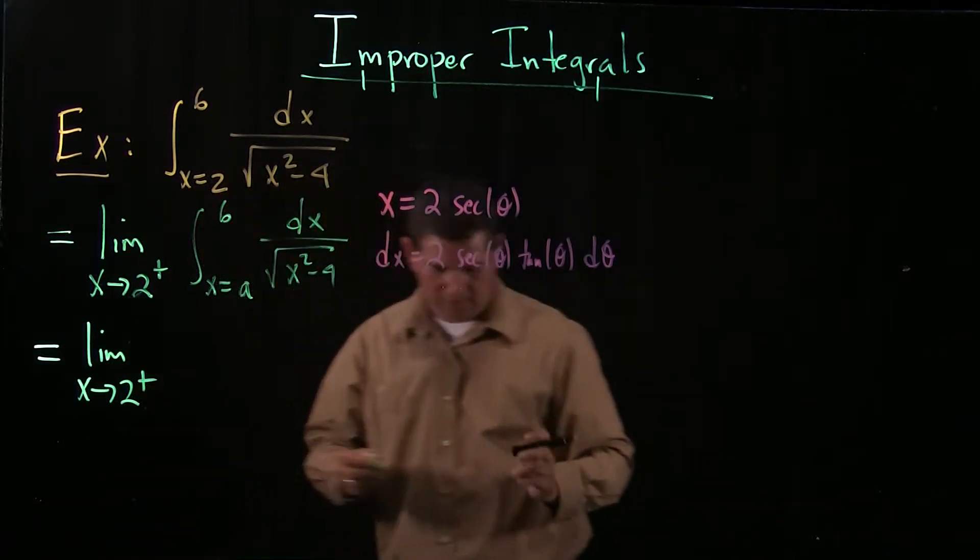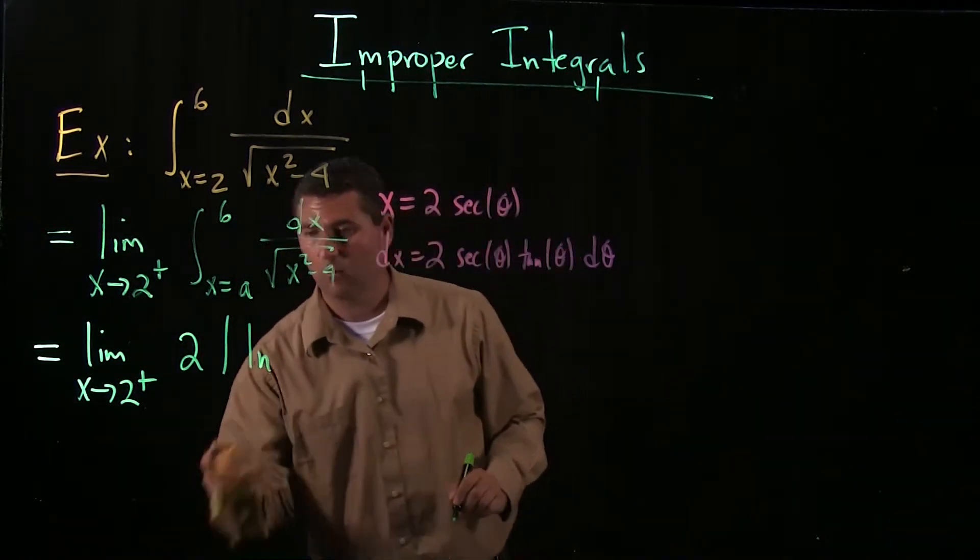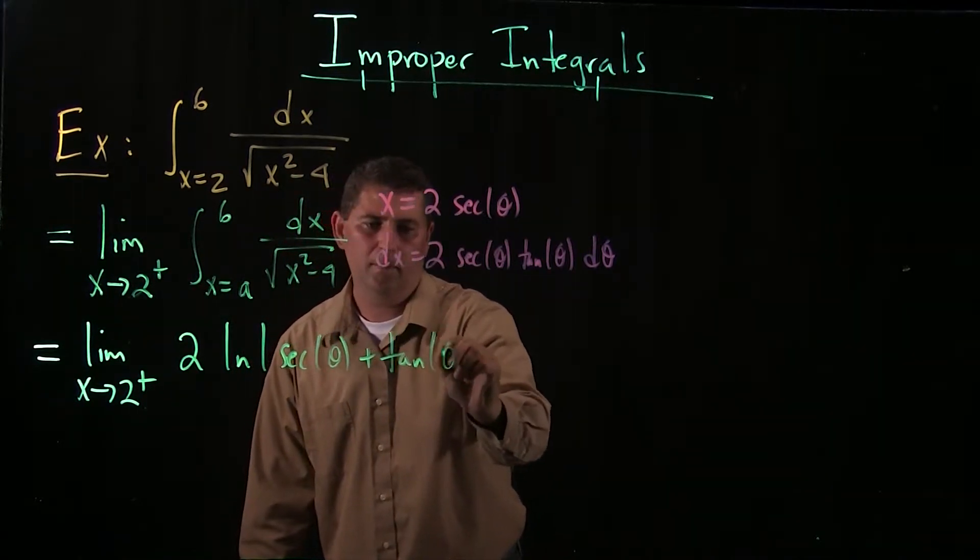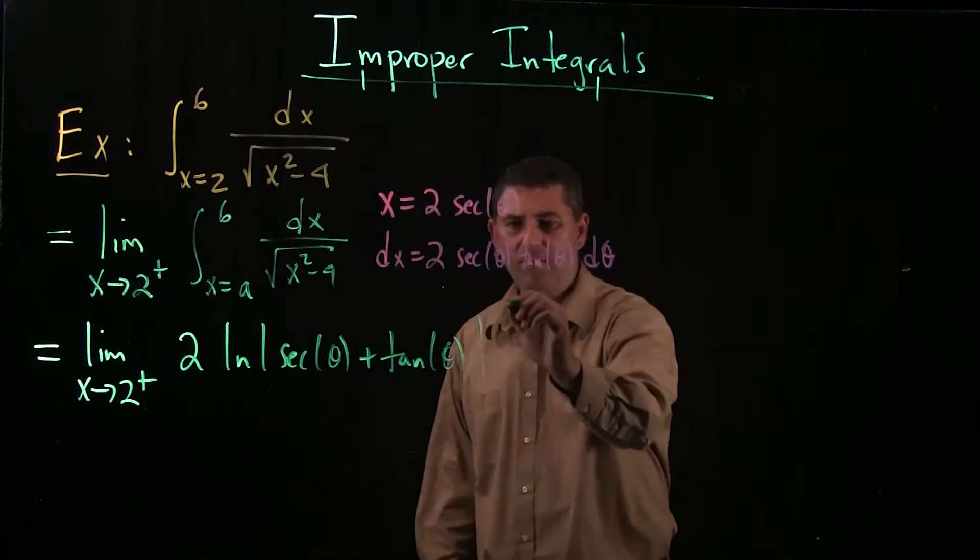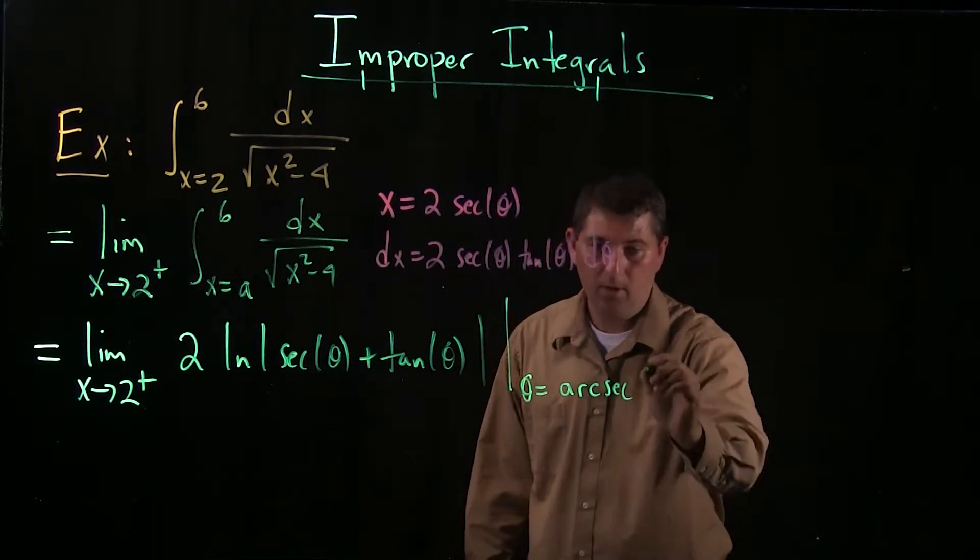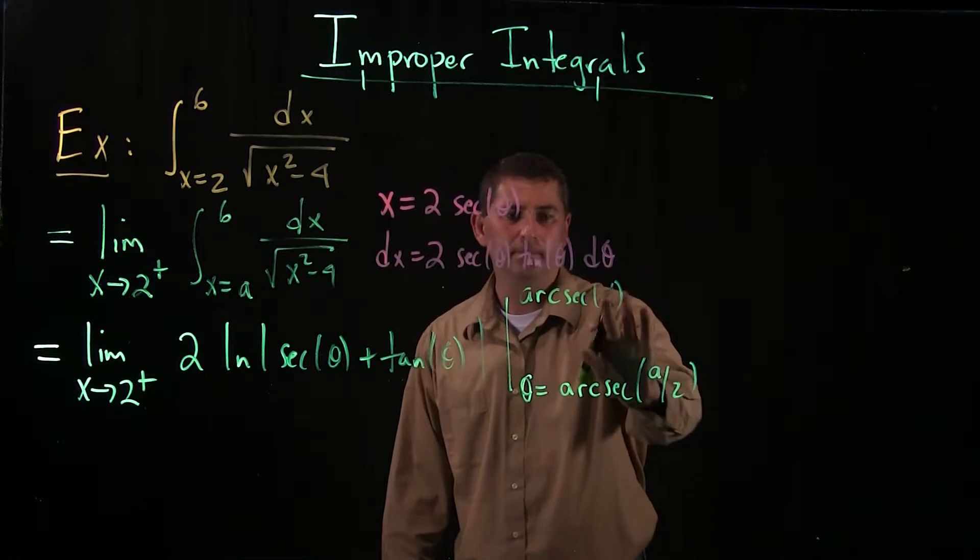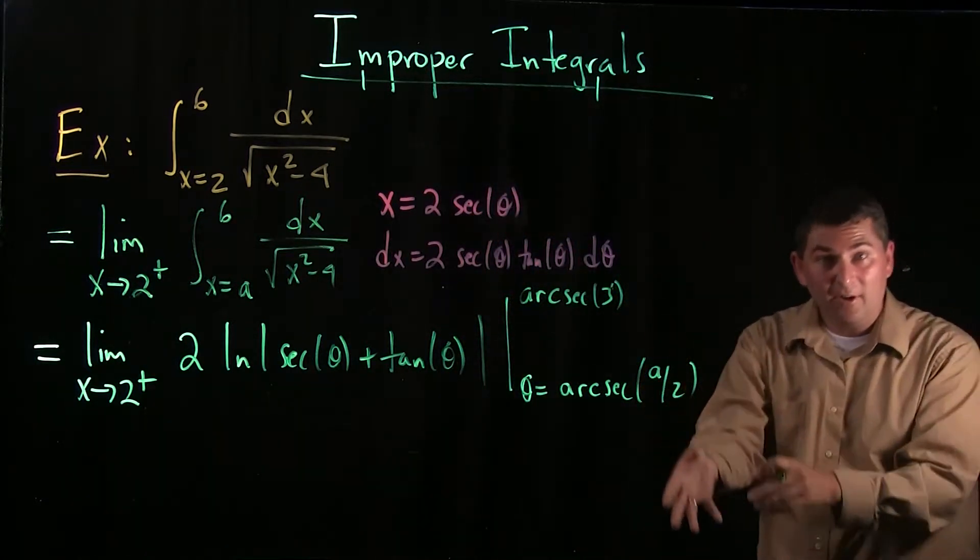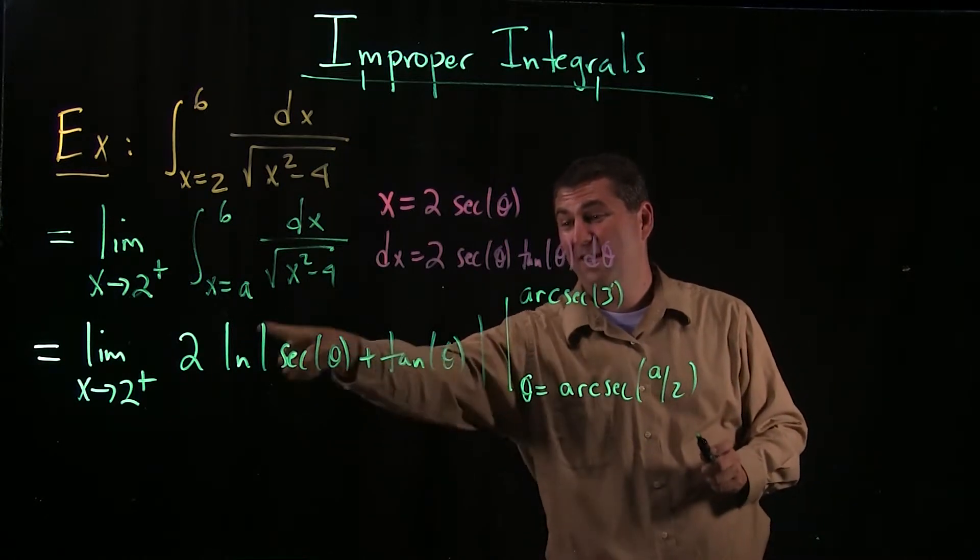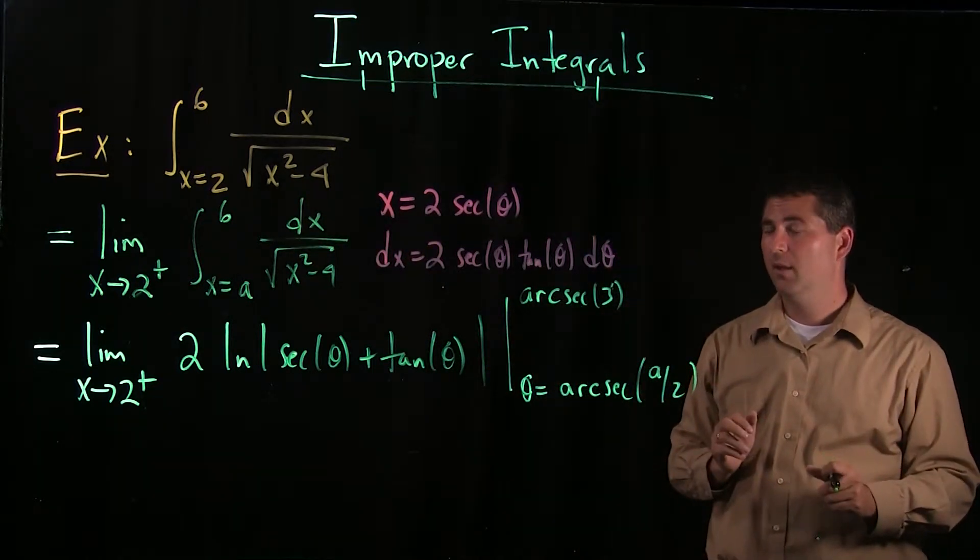Once we jump ahead, we keep the limit around, we're always keeping our limit around. This ends up reducing to 2 times the natural log of the absolute value of the secant of theta plus the tangent of theta. And we have to evaluate this as theta runs from the arc secant of a over 2 up to the arc secant of 3.